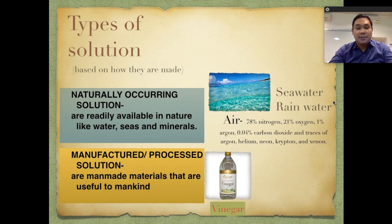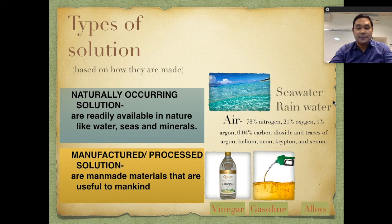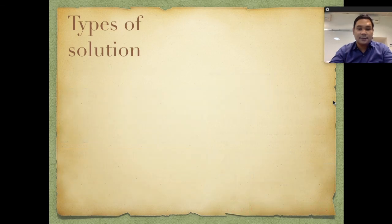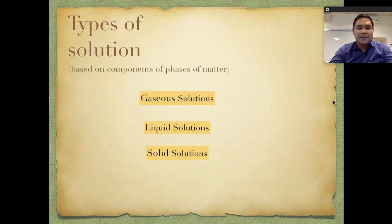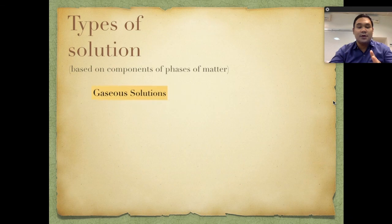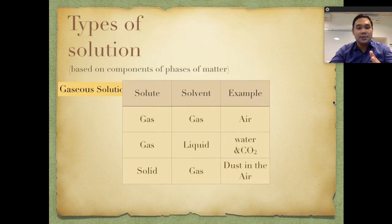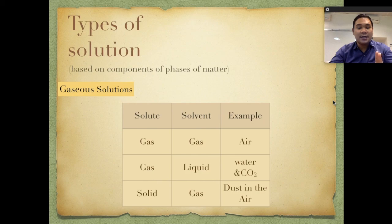The second type is manufactured or processed solution — these are man-made materials useful to mankind. Examples include vinegar, gasoline, and alloys. Now, classifying types of solution based on components or phases of matter, we have three types: gaseous solution, liquid solution, and solid solution. For gaseous solutions, a gas solute and a gas solvent gives us air as an example.